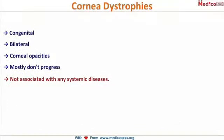What are these corneal dystrophies? They are congenital bilateral corneal opacities. Please mind these words — congenital bilateral corneal opacities — and they do not progress. Most of them do not progress.